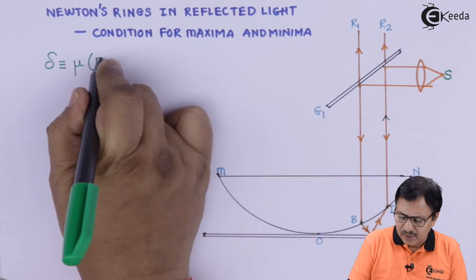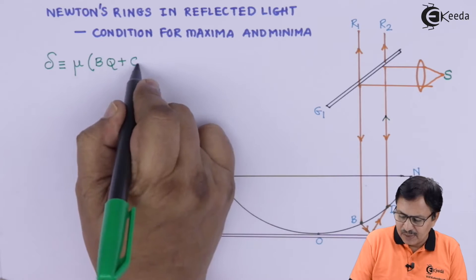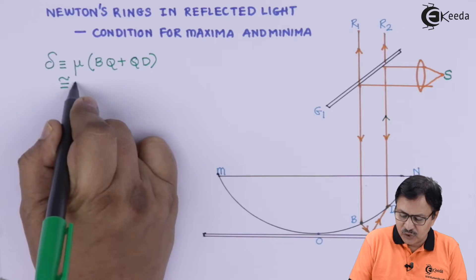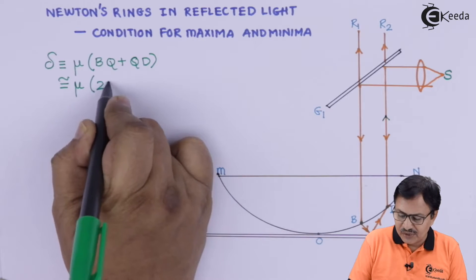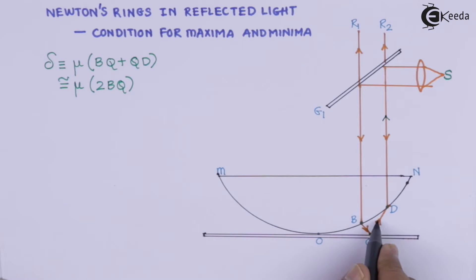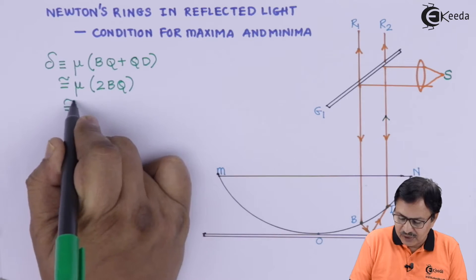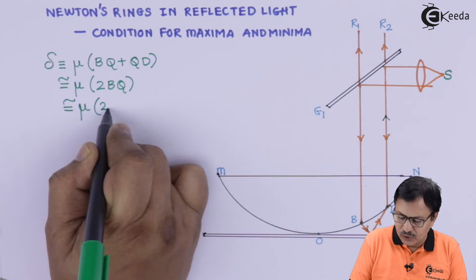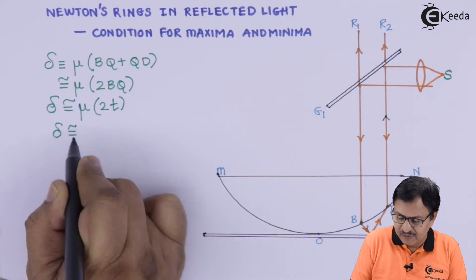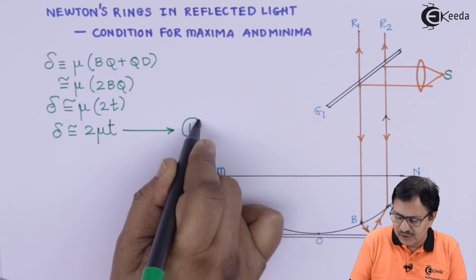To simplify, we approximate this to μ times 2·BQ, making the assumption that both distances are approximately the same. With that approximation, delta equals μ times 2t — that is, delta equals 2μt. Let us mark this as equation 1. This is the optical path difference between the two waves.